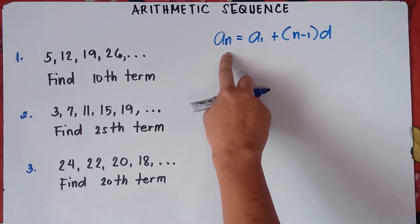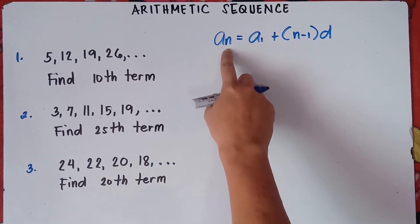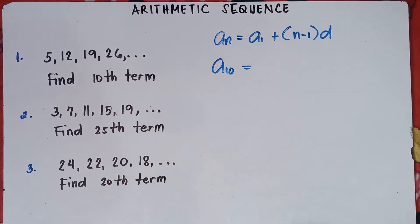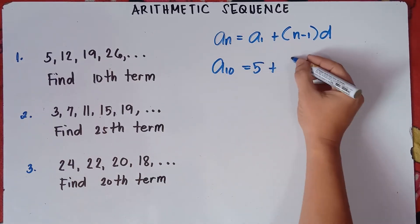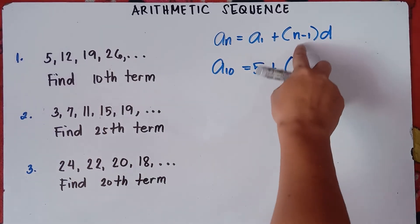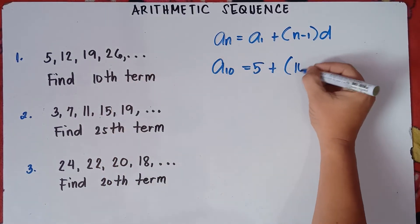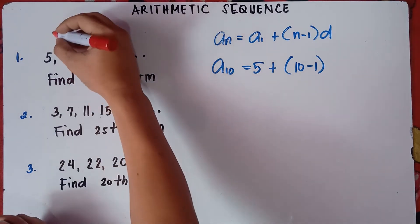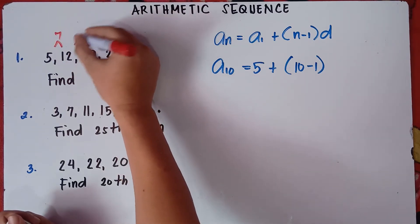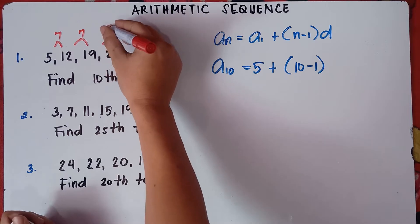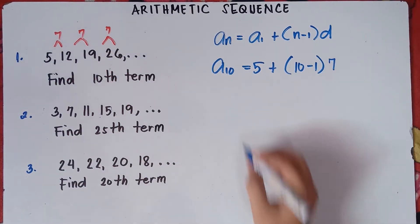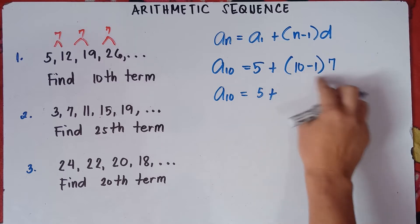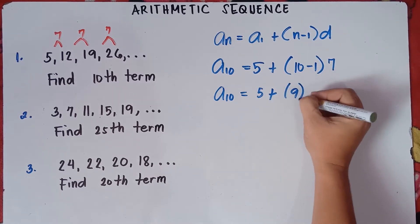Since we're told to find the 10th term, n equals 10. So a sub 10 equals the first term, which is 5, plus (10 minus 1) times the common difference. The common difference is 12 minus 5, which is 7; 19 minus 12 is 7; and 26 minus 19 is still 7. So the common difference is 7. That gives us: a sub 10 equals 5 plus (10 minus 1) times 7.